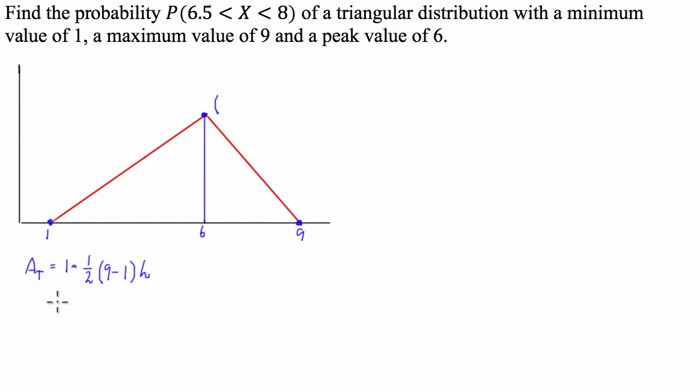So therefore, 1 is equal to 9 take 1 is 8, divided by 2 is 4. So the height of this triangle is going to be equal to 1 quarter.